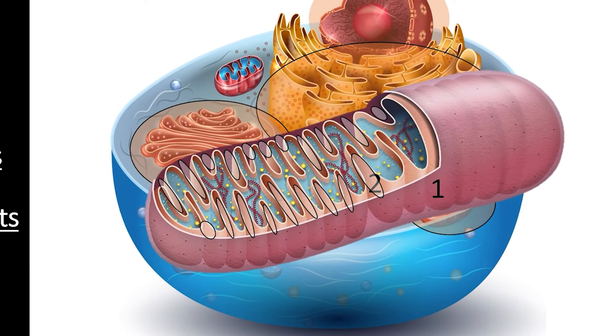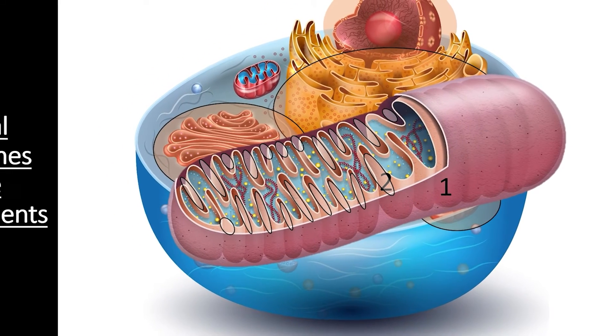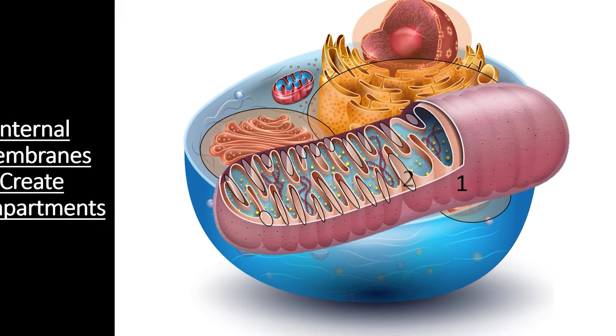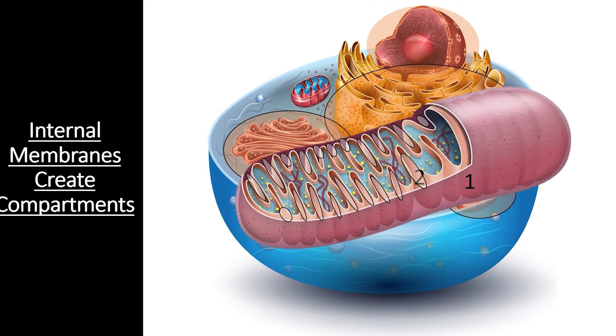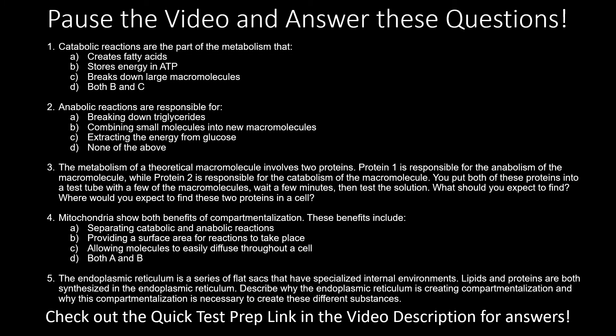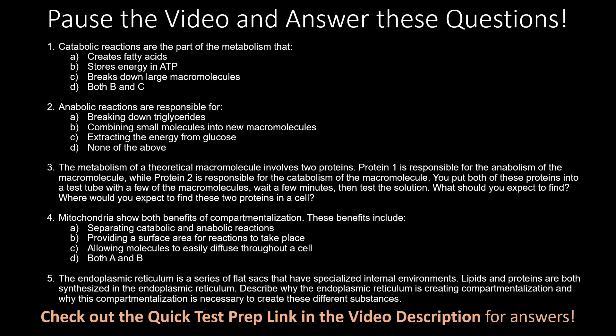These basic principles of compartmentalization — separating important catabolic and anabolic reactions and creating a large surface area for reactions to occur — are true of all membranes within a cell. Now that we have covered the basics of metabolism and compartmentalization, let's see if you are keeping up. Pause the video and answer the questions in this short quiz. You can find all of the answers through the quick test prep link in this video's description.